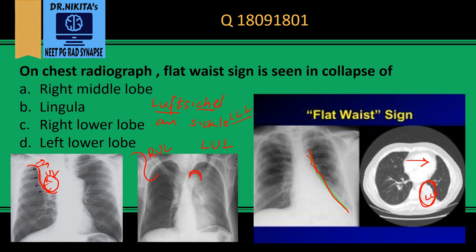An easy way to remember Luft Sichel: 'lu' stands for left upper lobe. In left upper lobe collapse, the hyper-expanded superior segment of the left lower lobe comes near the aortic arch, producing the sickle-shaped air surrounding it — that is the Luft Sichel sign.